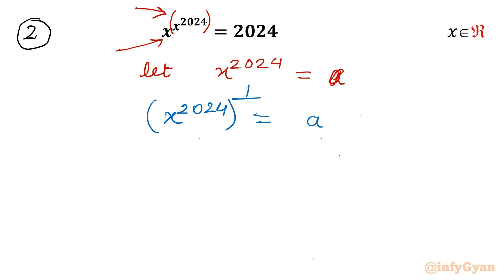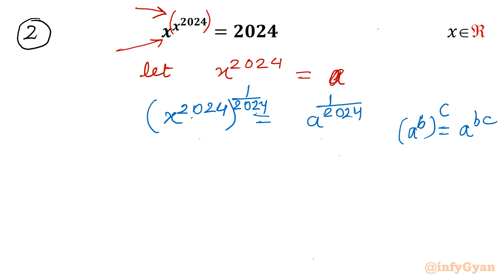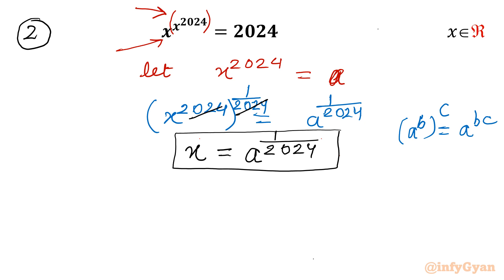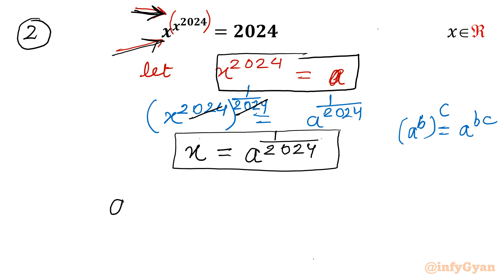Now raise both sides to the power 1 over 2024. Using the exponent property that (a^b)^c equals a^(b times c), these two powers of 2024 cancel with the reciprocal. So x equals a raised to the power 1 over 2024. Now replace both the base and the exponent in our original equation. I will write a raised to the power 1 over 2024, and then x raised to the power 2024 becomes a. So the equation becomes a^(1/2024) raised to the power a, equal to 2024.